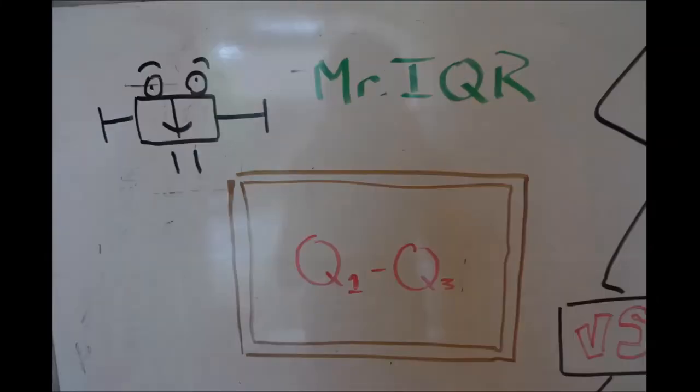Howdy, y'all. My name's Mr. Interquartile Range, but people just call me Mr. IQR. I'm the range of the middle 50% of scores in the distribution separated into four quartiles. Quartile 3 minus quartile 1 is me.